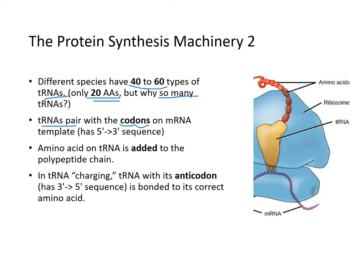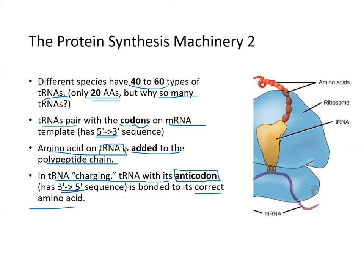tRNA pairs with the codon on the messenger RNA, which has the 5' to 3' sequence because it was copied off the 3' to 5' template DNA. The amino acid on the tRNA is added to the polypeptide chain. In tRNA charging, the tRNA with its anti-codon sequence (3' to 5') is bonded to its correct amino acid. The function of transfer RNA is to transfer the amino acid to the growing polypeptide chain.